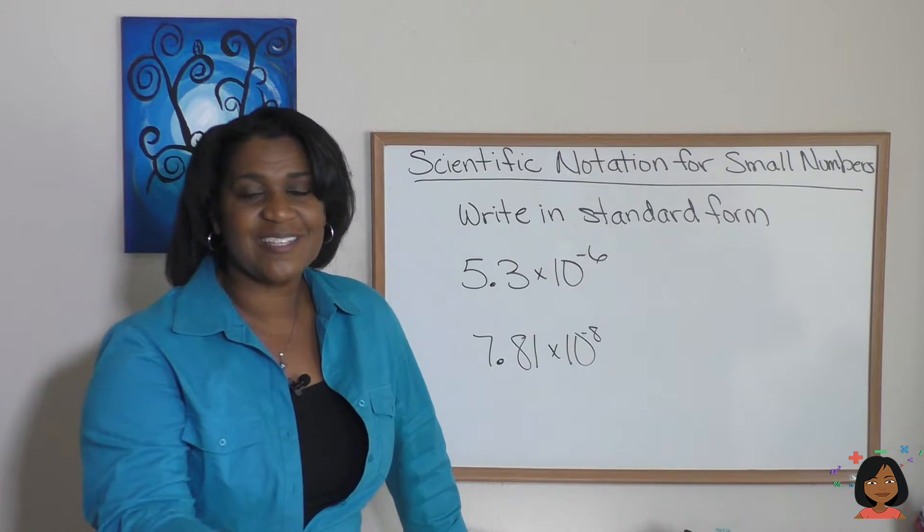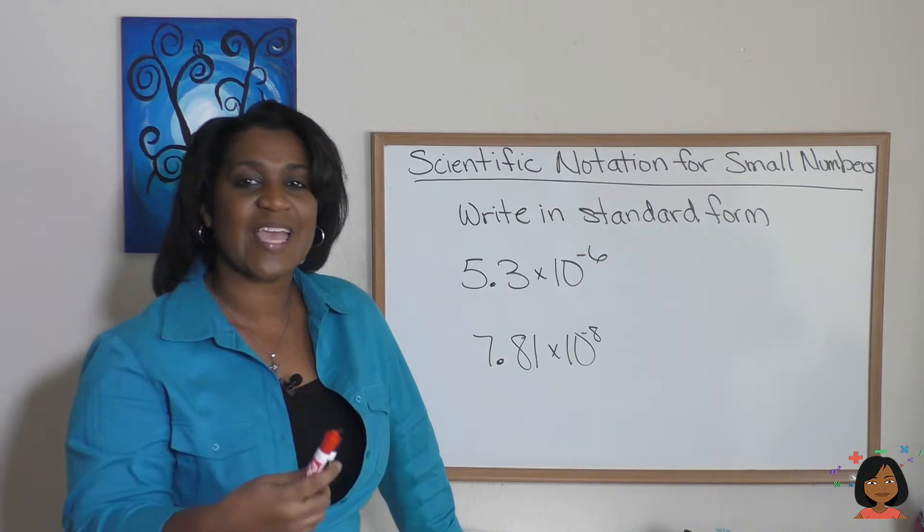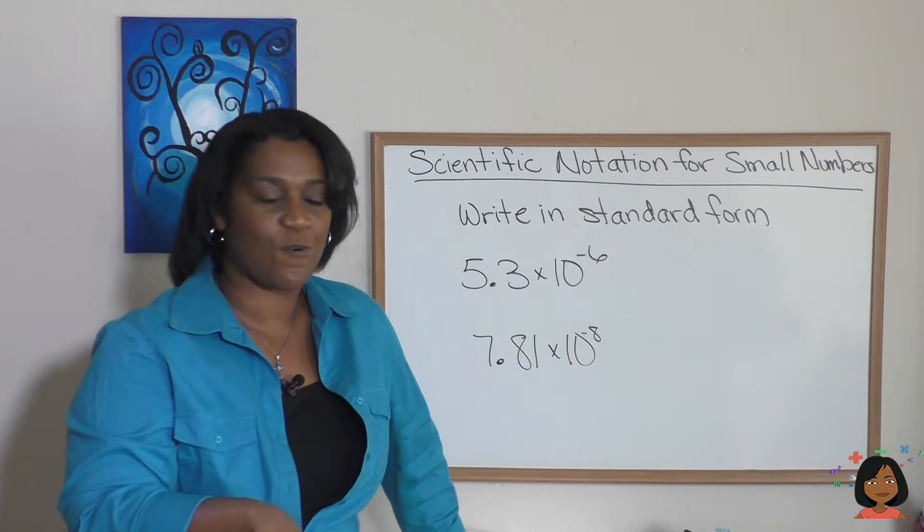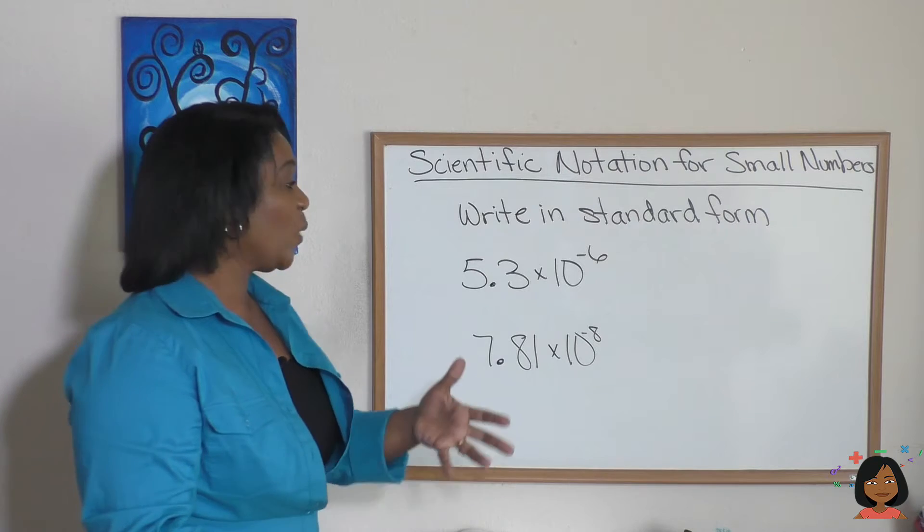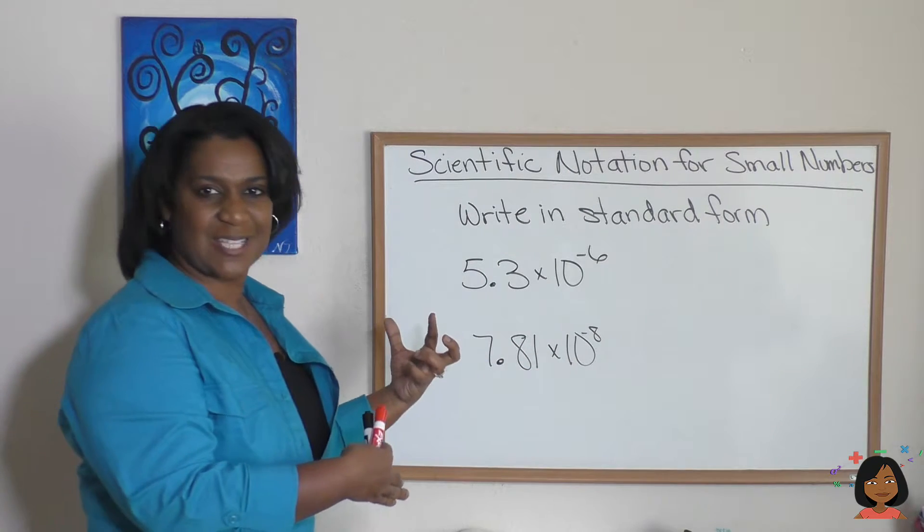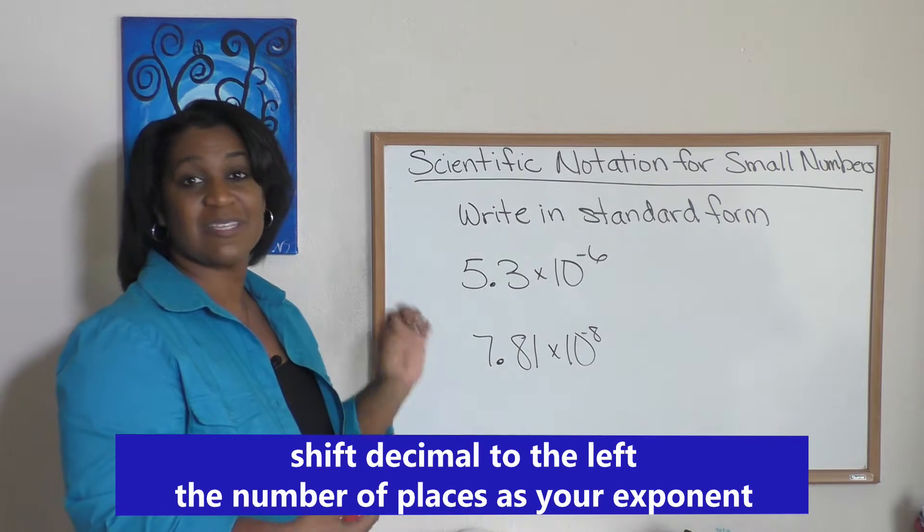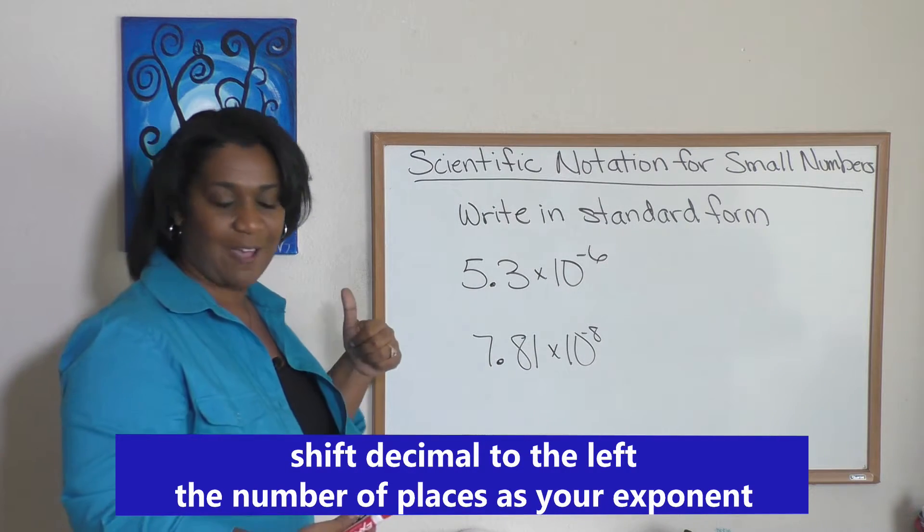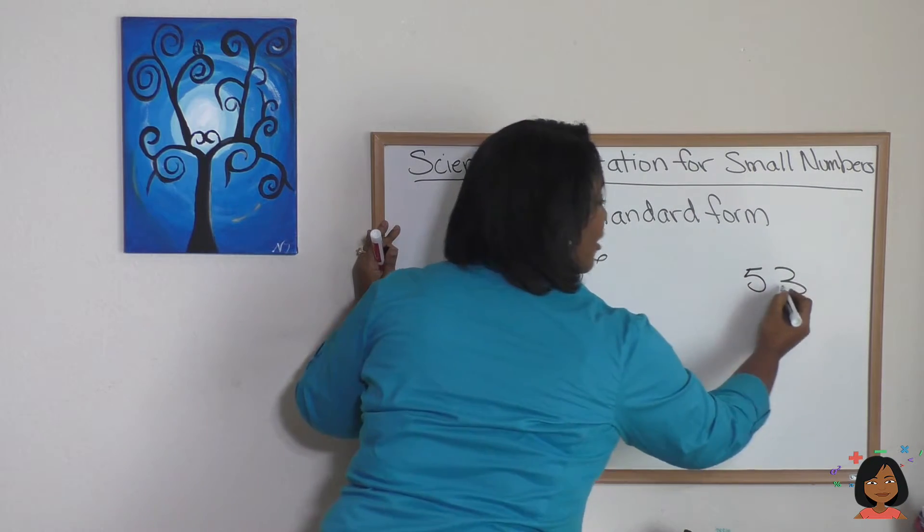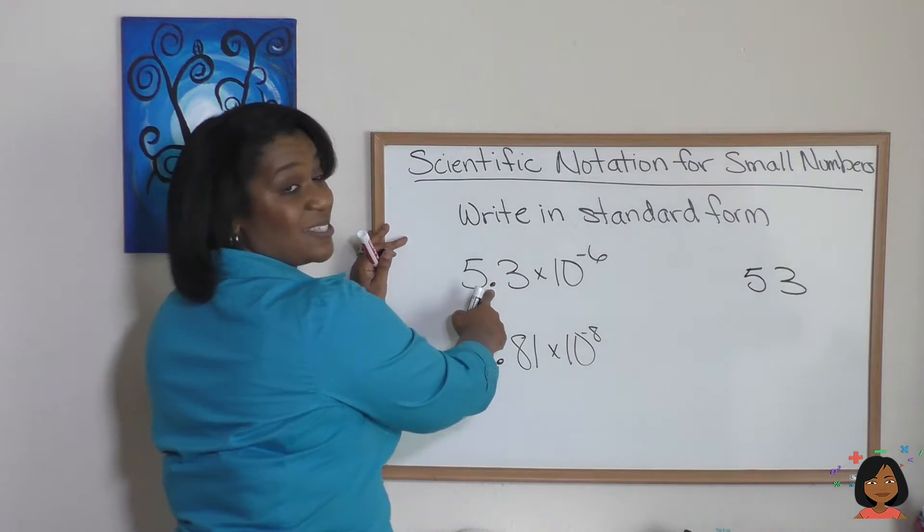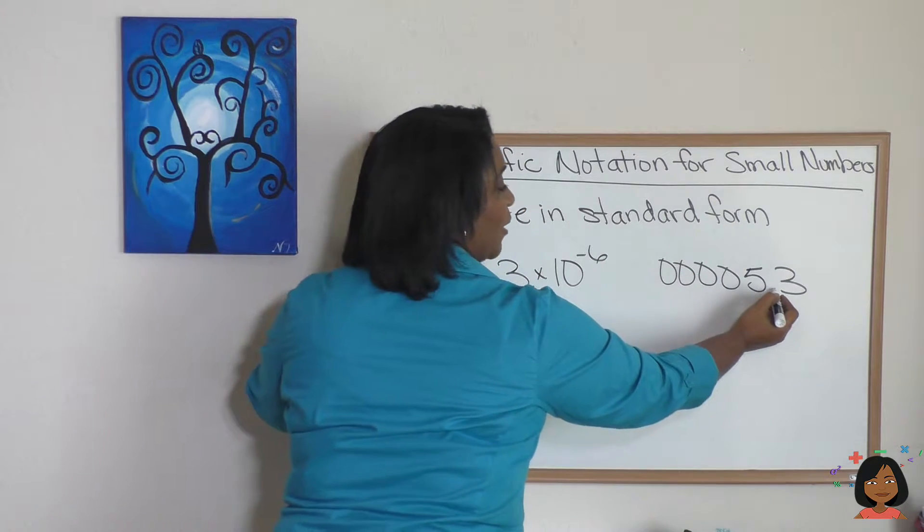The good news is you can also go in reverse. If someone gives you scientific notation, you can take that and turn it into standard form. So we've got 5.3 times 10 to the negative 6. We want to put the zeros back into this decimal and see what it really is. We're going to move our decimal six places to the left, using zeros as placeholders. I'm going to write my 53, knowing I'm going to move this decimal six places. Let's throw in a few zeros to get us started. Now let's do it.